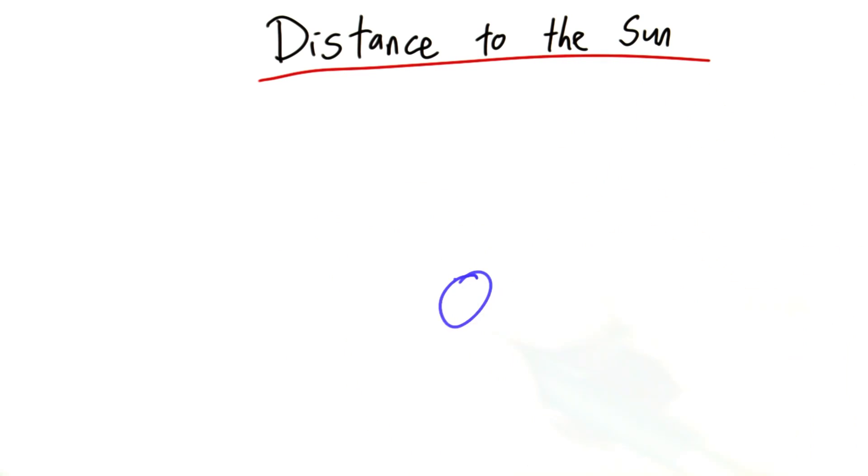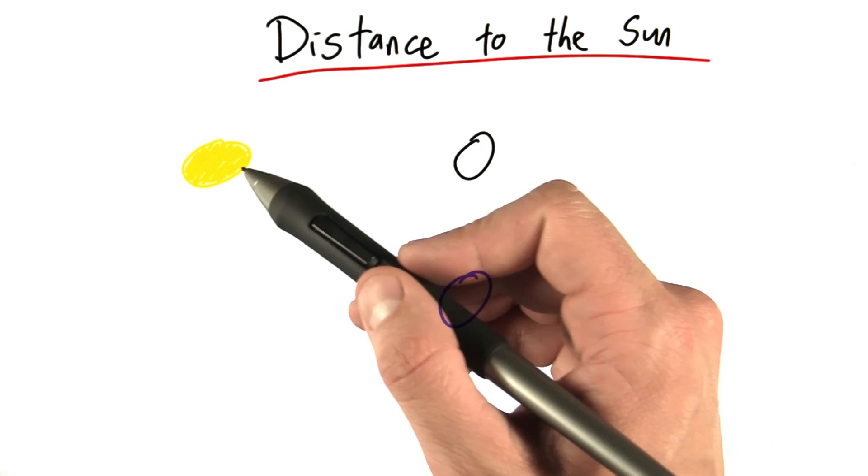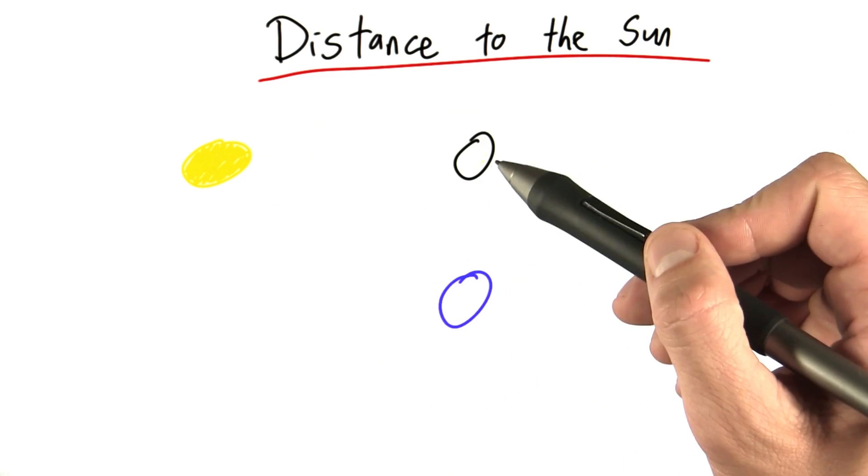Let's look at a picture. Here's the Earth, here's the Moon. Over here, we have the Sun. Now let me say again, this is not to scale. The Sun should be much larger and much further away than depicted here. The Moon should be further away as well.